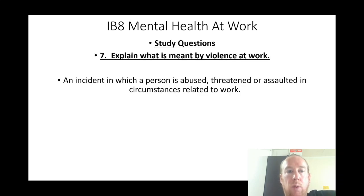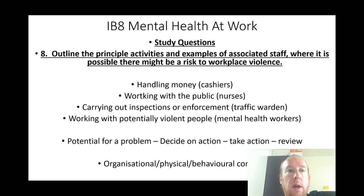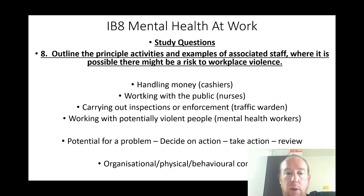Explain what is meant by violence at work: an incident in which a person is abused, threatened, or assaulted in circumstances related to work. Outline occupational groups at risk: handling money (cashiers), working with the public (nurses and teachers), carrying out inspections or enforcement (traffic wardens), working with potentially violent people (mental health workers). Strategy: identify the potential problem, decide on action, take action, and review using organizational, physical, or behavioural controls.